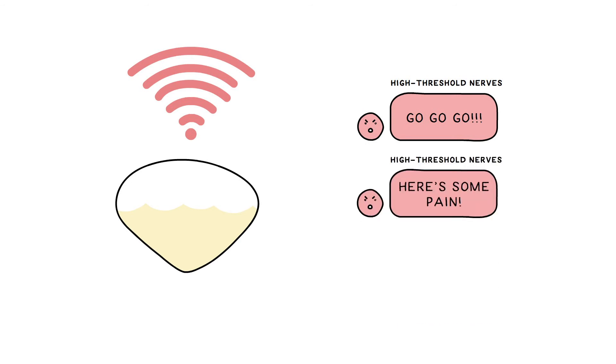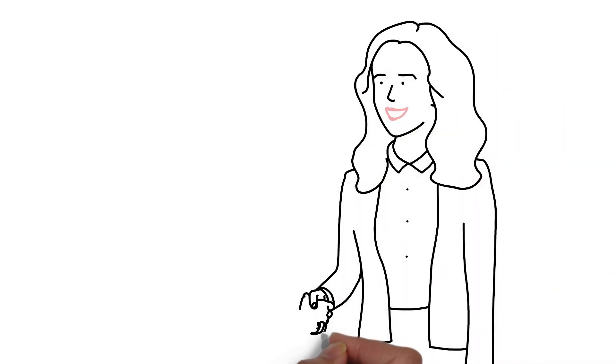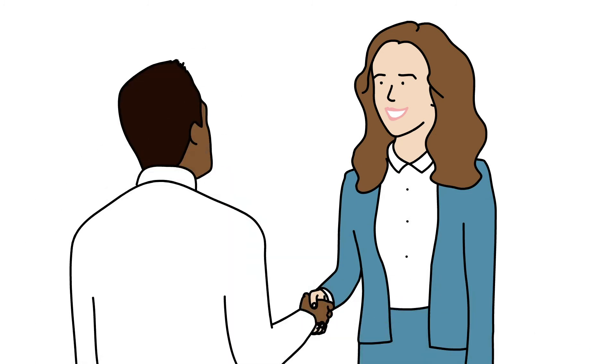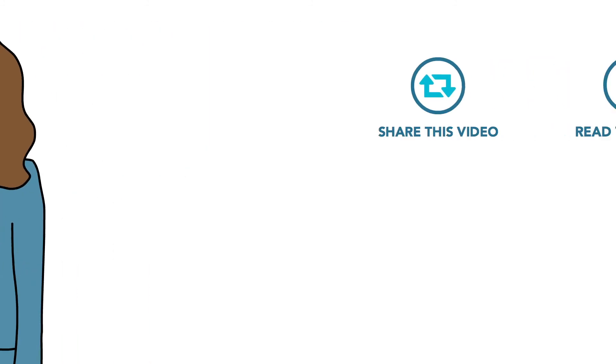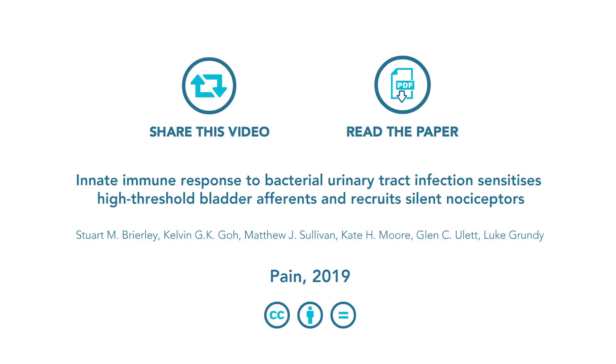If these neurons don't reset back to normal after the infection is resolved, Kate's feelings of urgency and pain may never go away. This new understanding represents an important piece in the puzzle that is persistent bladder overactivity. It could lead to new treatments that make a difference in the lives of people like Kate.